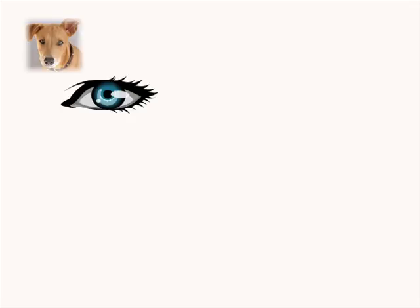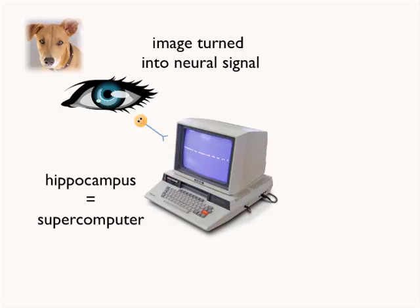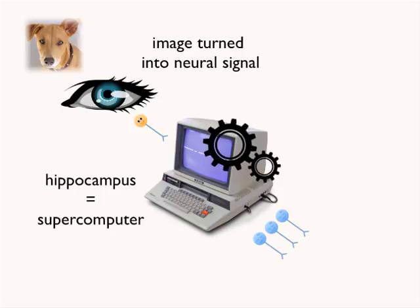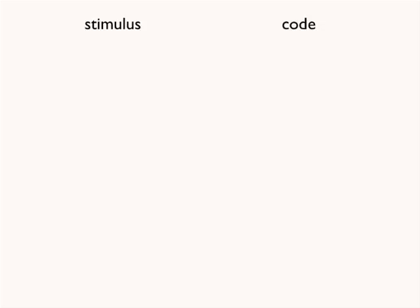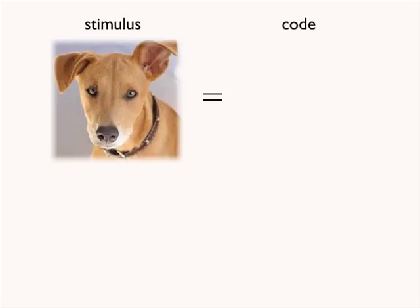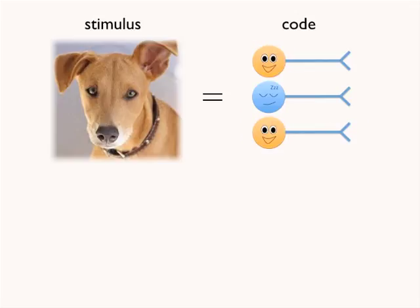When you view a stimulus, such as a dog, that image is turned into a neuronal signal through a process called transduction. This signal is sent to the hippocampus, which acts as a supercomputer to generate a specific neuronal code for that dog. Once that code has been established, you now have a memory. Different stimuli are associated with different codes. When you see this dog, a certain pattern of neurons is activated — the pattern encodes the memory of the dog, and when you see the same dog, those same neurons are activated again.